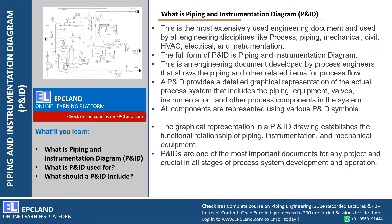All the components are represented using P&ID symbols. If you look at this picture, there will be a lot of symbols — for valves, for instruments — everything will be represented in the form of symbols. So P&ID is nothing but a collection of all the symbols with respect to piping, equipment, valves, instruments, and any other component associated within the piping system.